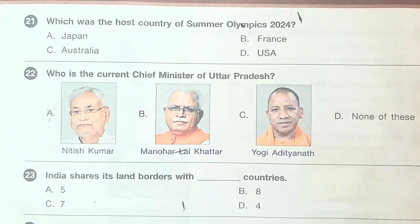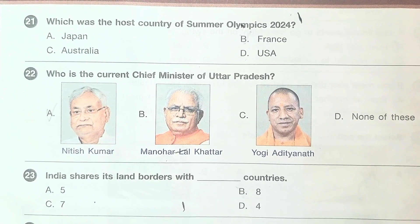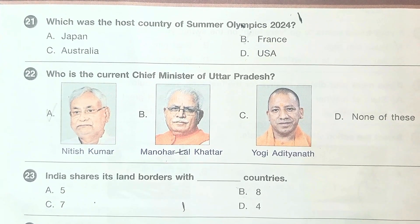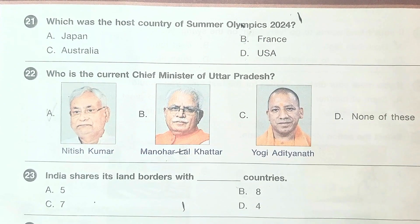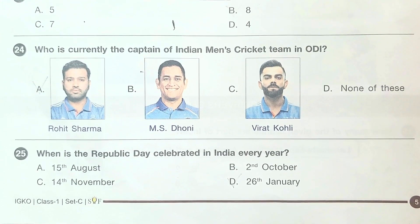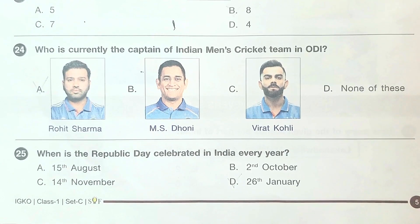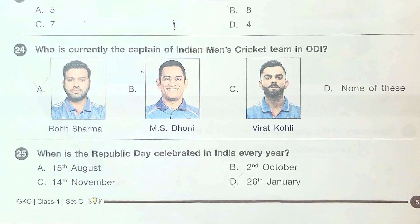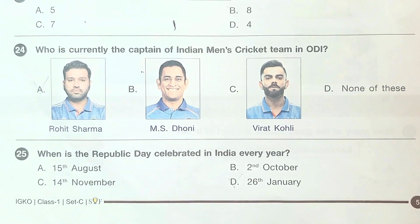Question number 23: India shares its land boundaries with how many countries? The answer is option C, Seven. Question number 24: who is currently the captain of the Indian men's cricket team in ODIs? The answer is option A, Rohit Sharma. Question number 25: when is Republic Day celebrated in India every year? The answer is option D, 26th January.